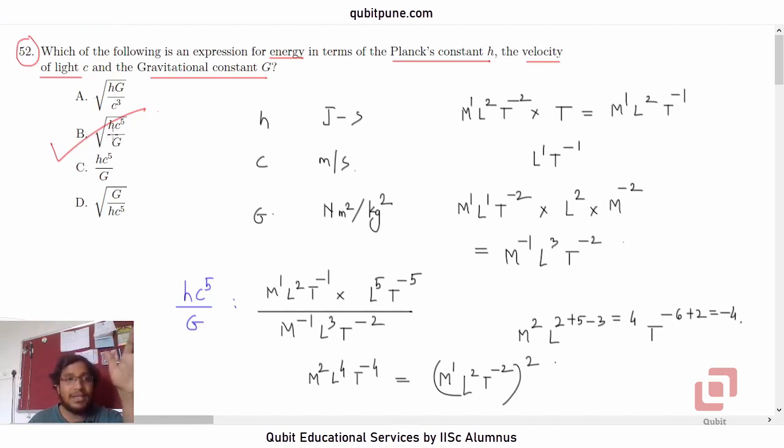If you don't get anything of the dimensions of energy with h c raised to 5 by G or its square root or reciprocal, then it has to be option a. But it's not the case. It's option b. In our next video, we will be solving question number 53.